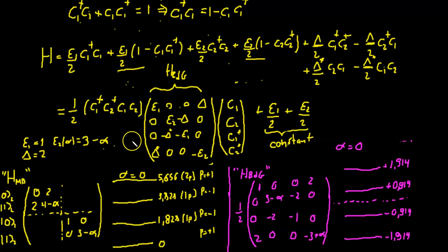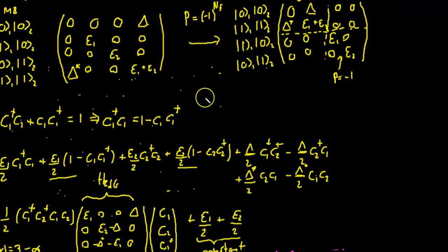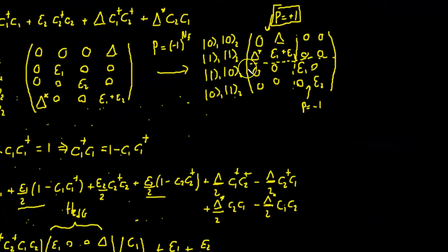We first diagonalized this Hamiltonian, and we mentioned that this is block diagonal in terms of the parity operator. So if you take minus one to the power of the number of fermions on each state, if you have either zero or two fermions, they all fall into the same parity block plus one. And if you have only one, either on state one or on state two, then you are in the minus one block. So the Hamiltonian is block diagonal in this basis.